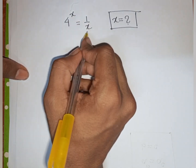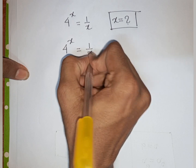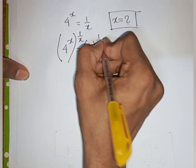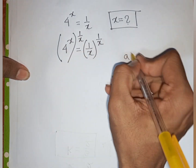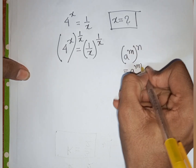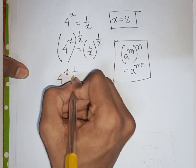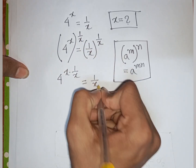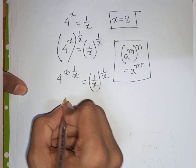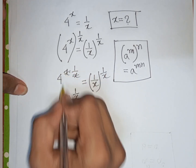For the second problem: solve 4^x equals 1/6. We multiply both sides by the power of 1/x, applying the rule a^m raised to power 1/x equals a^(m/x). So 4^(x times 1/x) gives 4^1 equals 4, and the x terms cancel on the left side.